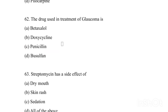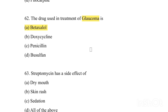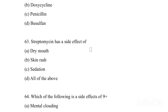The drug used in the treatment of glaucoma is: Option A: Betaxolol. Option B: Doxycycline. Option C: Penicillin. Option D: Lusulfon. The answer for treatment of glaucoma is Option A, Betaxolol.